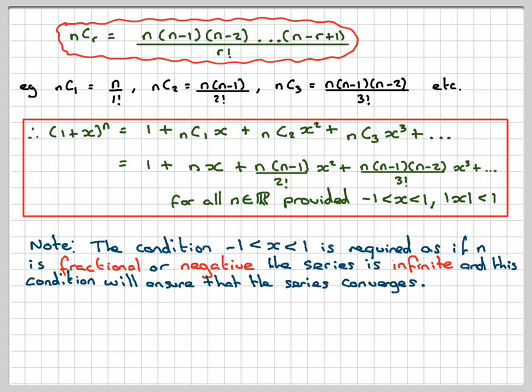Okay, so this has been a video to show you how the formula for expanding (1 + x)^n, where n is fractional or a negative number, is expanded using the binomial theorem. And this is what you need to know, this formula here. I hope you've understood and thank you very much for watching.